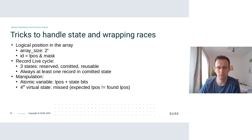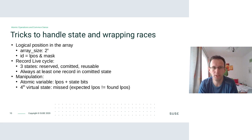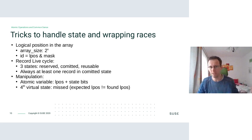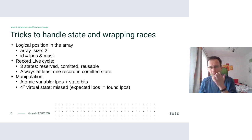Now the interesting tricks — most of them actually came from John in the original patch set. Instead of storing indexes to the ring buffer arrays, we work with logical positions. The array size is a power of two and we get the index by just masking out the higher bits. This helps a lot in solving troubles with wrapping, reusing the same location again and again, and preventing some races.